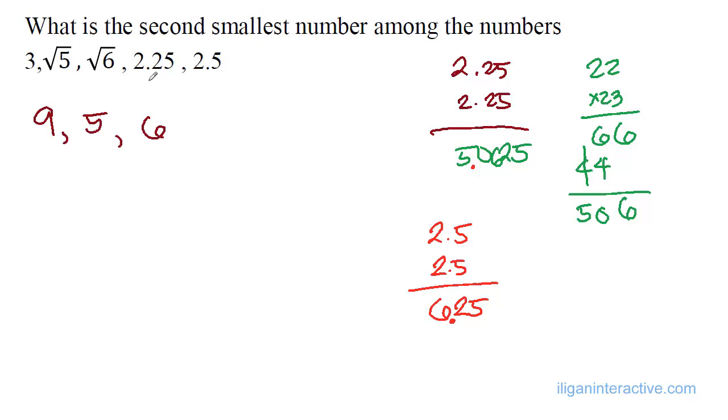So this thing is 5.0625 and this thing is 6.25. According to the problem, if we arrange this from smallest to highest, to the largest, we're looking for the second smallest, so we need to arrange these numbers in order from the smallest to the largest.